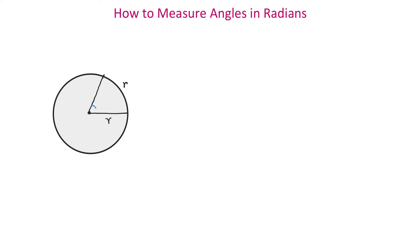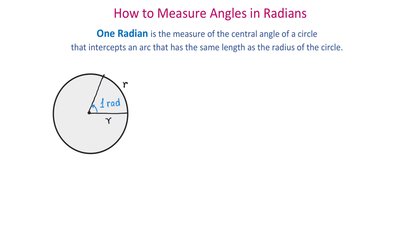This angle has the measure of one radian, and this is one symbol we can use for radians. One radian is the measure of the central angle of a circle that intercepts an arc that has the same length as the radius of the circle. One radian is approximately 57.3 degrees.